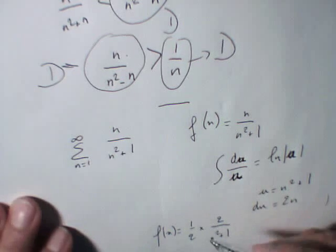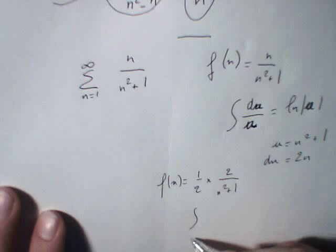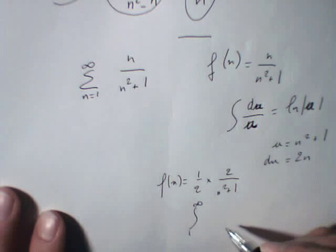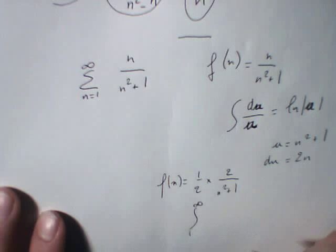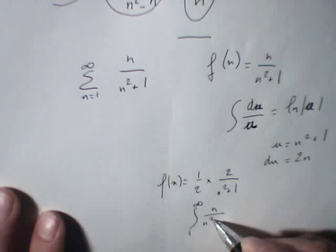So we could write that f equals 1 half multiplied by 2 divided by n squared plus 1. So if you integrate f of x, you will get, so integrate from 1 to infinity,